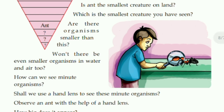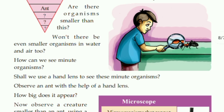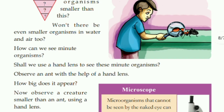Which is the smallest creature you have seen? You may have seen the fruit fly. Are there organisms smaller than this? Definitely yes — there are millions of organisms smaller than the ant. Minute means very small. How can we see minute organisms?